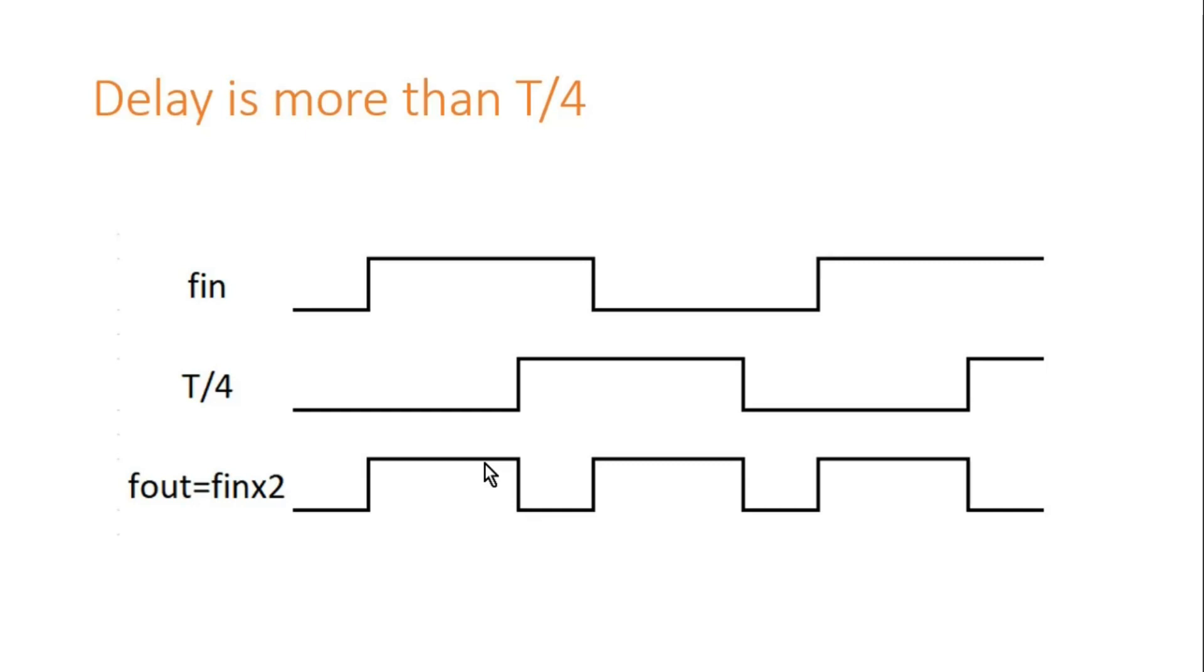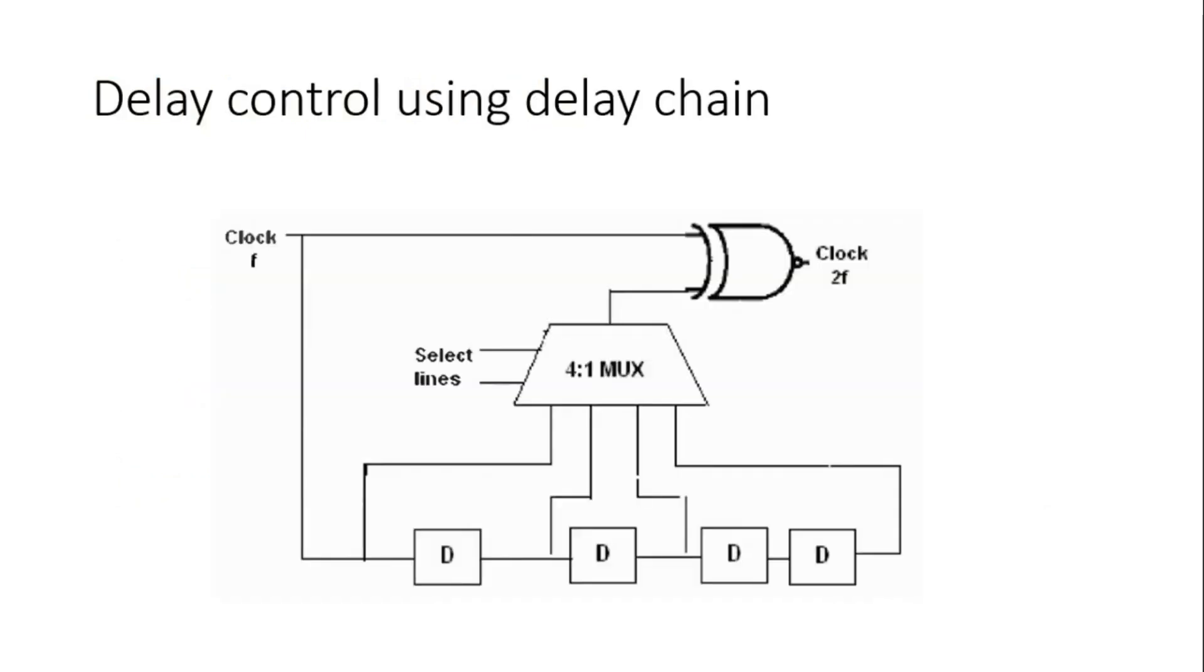It will not be exactly 50 percent. If you can tolerate the duty cycle change, then yes you can use this method also for frequency multiplication. If you need 50 percent duty cycle very precisely, then this method is not for you. Then you have to go for PLL, DLL, or clock managers inside the FPGA domain.